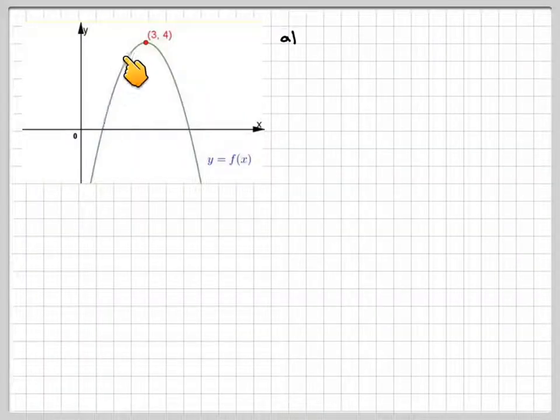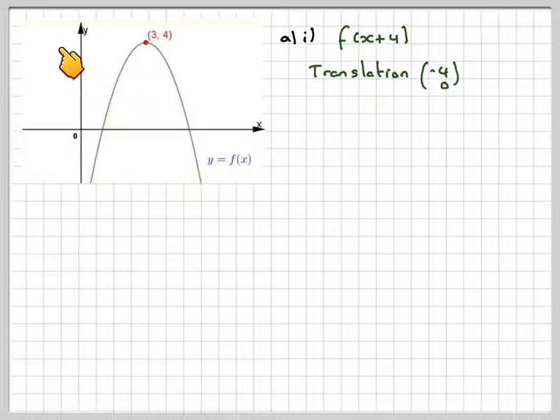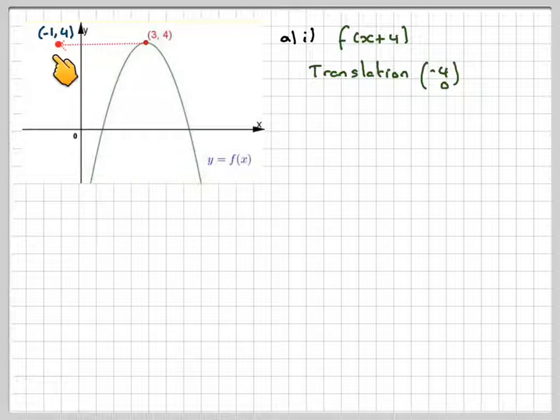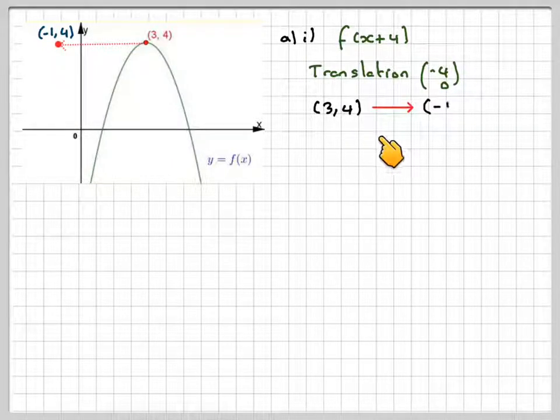If we've got the diagram here of the curve, what does f of x plus 4 equate to? It's a translation of minus 4, 0. So the curve will move that way 4 units, and therefore the new maximum will be (-1, 4). So we need to take 4 from 3 to get -1. The y-coordinate stays the same, so (3, 4) will map onto (-1, 4).